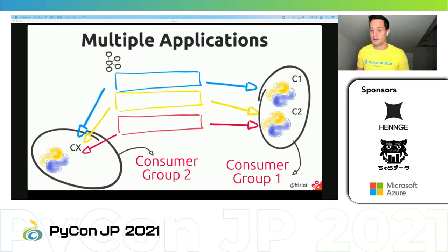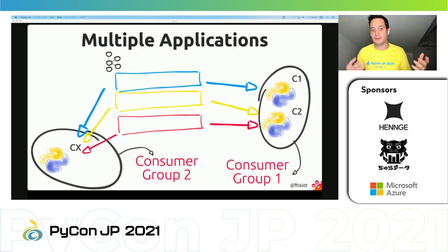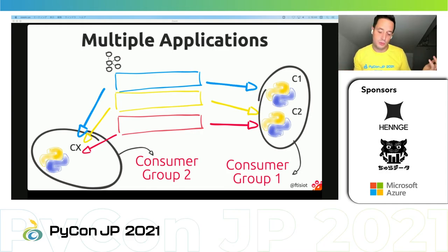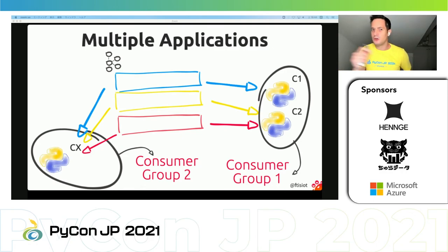Now for the last part of the talk. So far we've written Python code to push and pull data from Kafka. In reality, we often adopt Kafka in places where data already exists elsewhere — for example, taking data from a database into Kafka, or taking data from Kafka and pushing it to a database, without wanting to write all these connectors by hand.